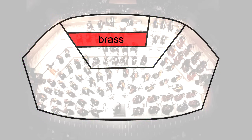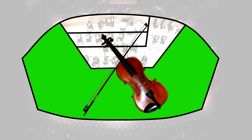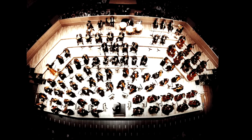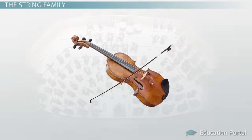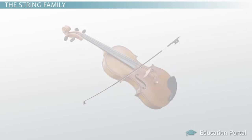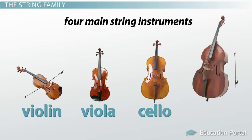When you think of the orchestra you most likely think of the violin, or at least some sort of string instrument. This is probably because they make up the majority of the instruments in the orchestra. All string instruments use string vibration to produce sound, which is why they are called the string family. There are four main string instruments: the violin, the viola, the cello, and the bass.